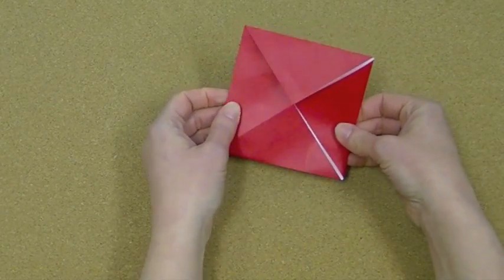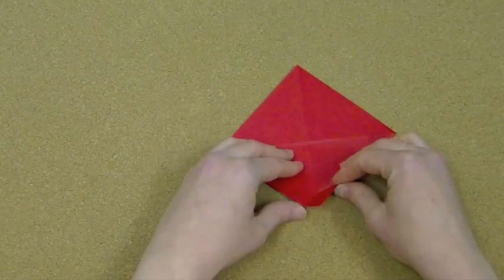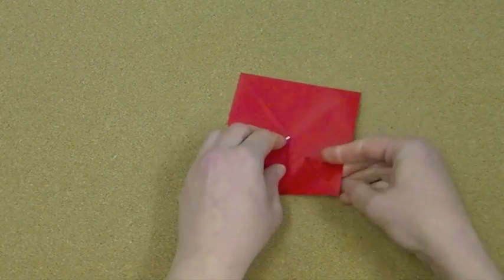Once you have all those folded towards the center, what we're going to do is turn it over and do the very same fold. We're folding up towards the center on all four sides.